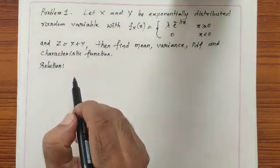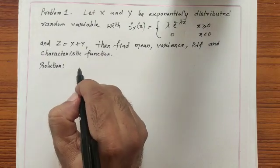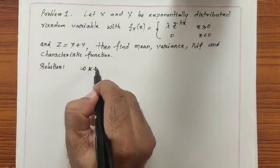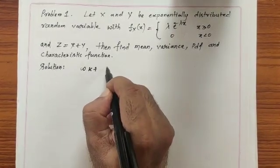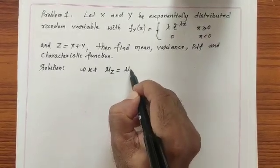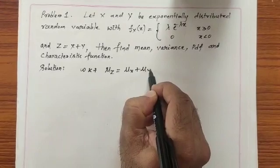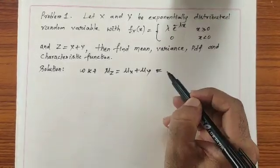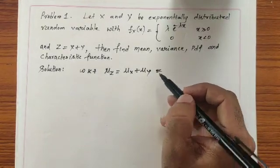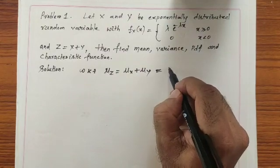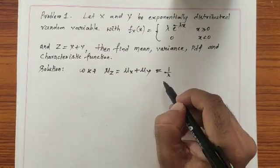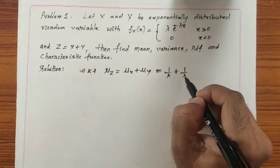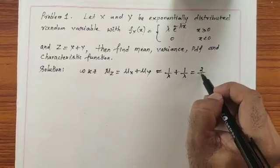We start with the solution. The mean value of z is equal to the mean value of x plus the mean value of y. We found that the mean of an exponential random variable is 1/λ, so the mean of z is 1/λ + 1/λ, which equals 2/λ.